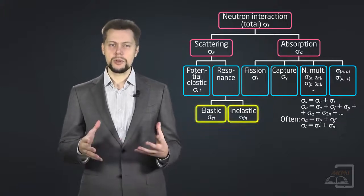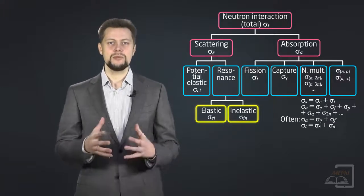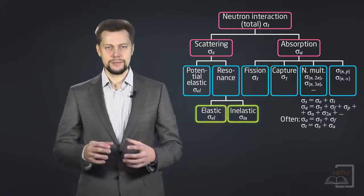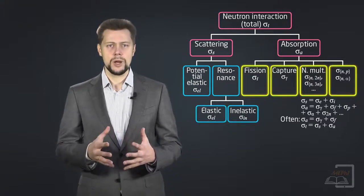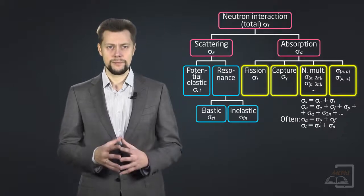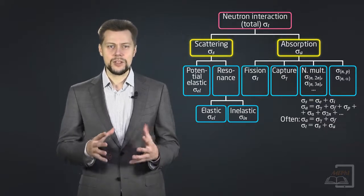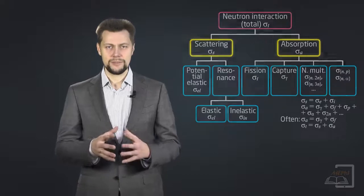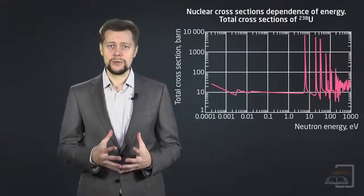So, microscopic cross-section of scattering is the sum of elastic and inelastic. Absorption is the sum of radioactive capture, fission, spallation and others. The total cross-section is the sum of absorption and scattering.